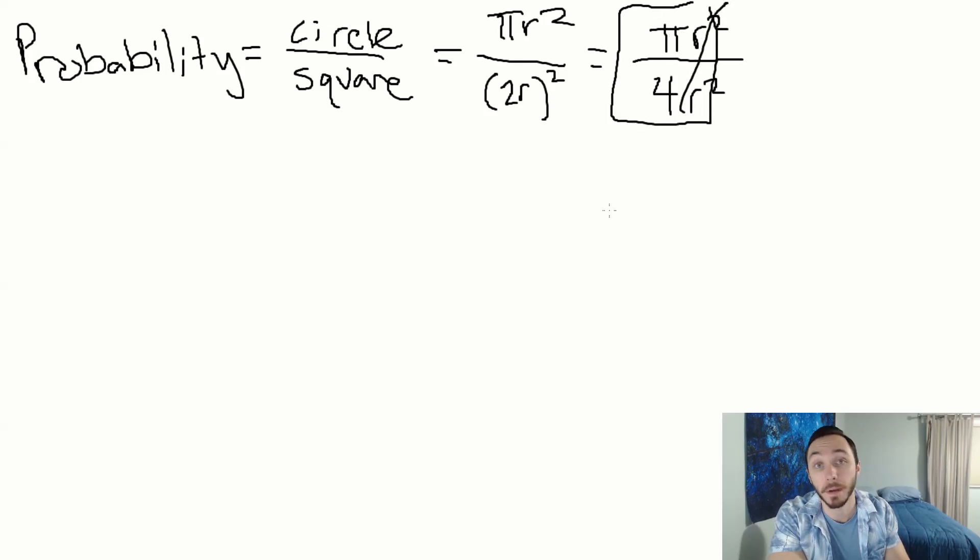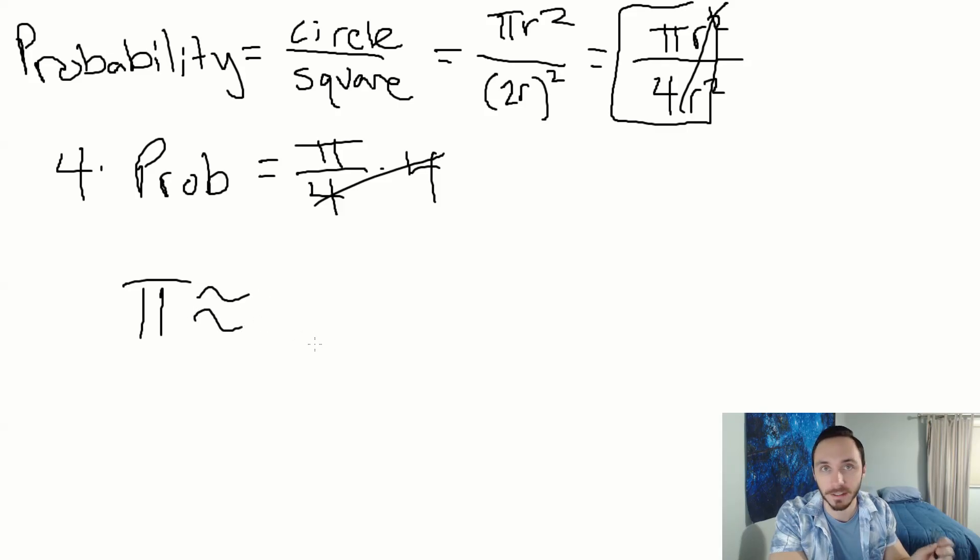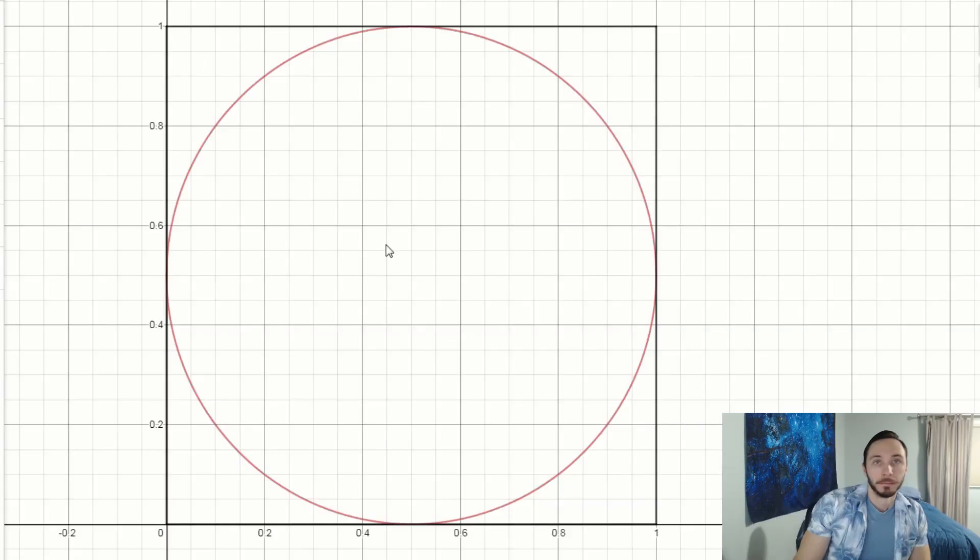If the probability equals pi over 4, how can we approximate pi? We just have to solve for pi. This is a very easy one-step equation. Multiply both sides by 4. Pi will approximate to 4 times whatever probability we end up getting.